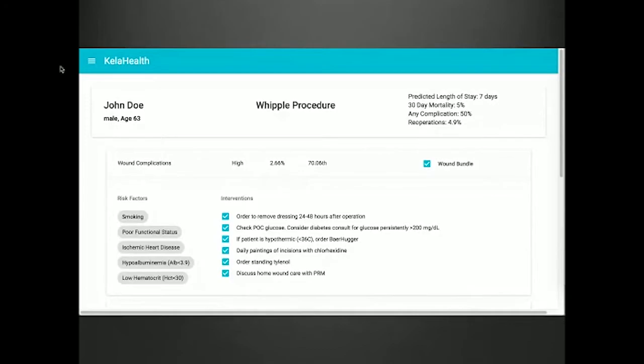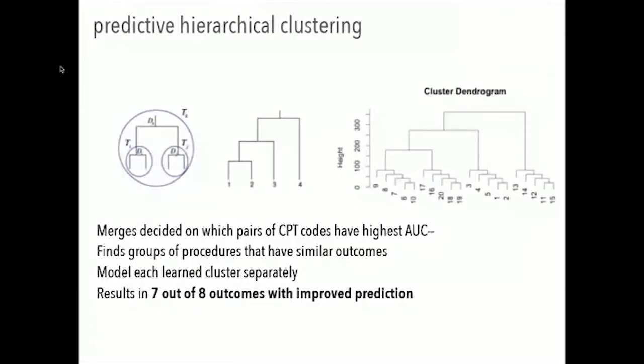From a machine learning standpoint, a lot of what this algorithm predicts off are procedural codes — what procedure the person is going through. Right now those are grouped together by hand by physicians. We were interested in whether we can do a better job automatically grouping them for the purpose of predicting complications, and we found that oftentimes this improves prediction.